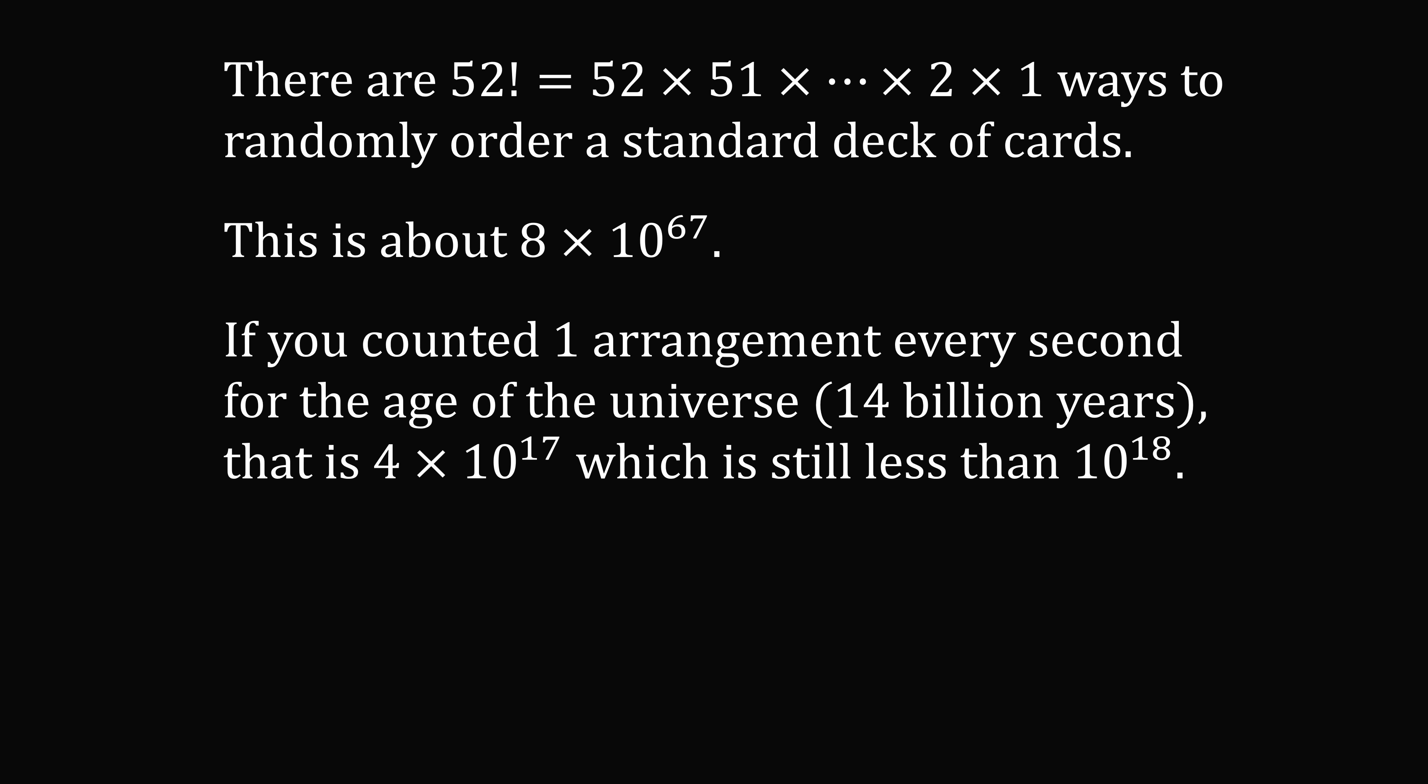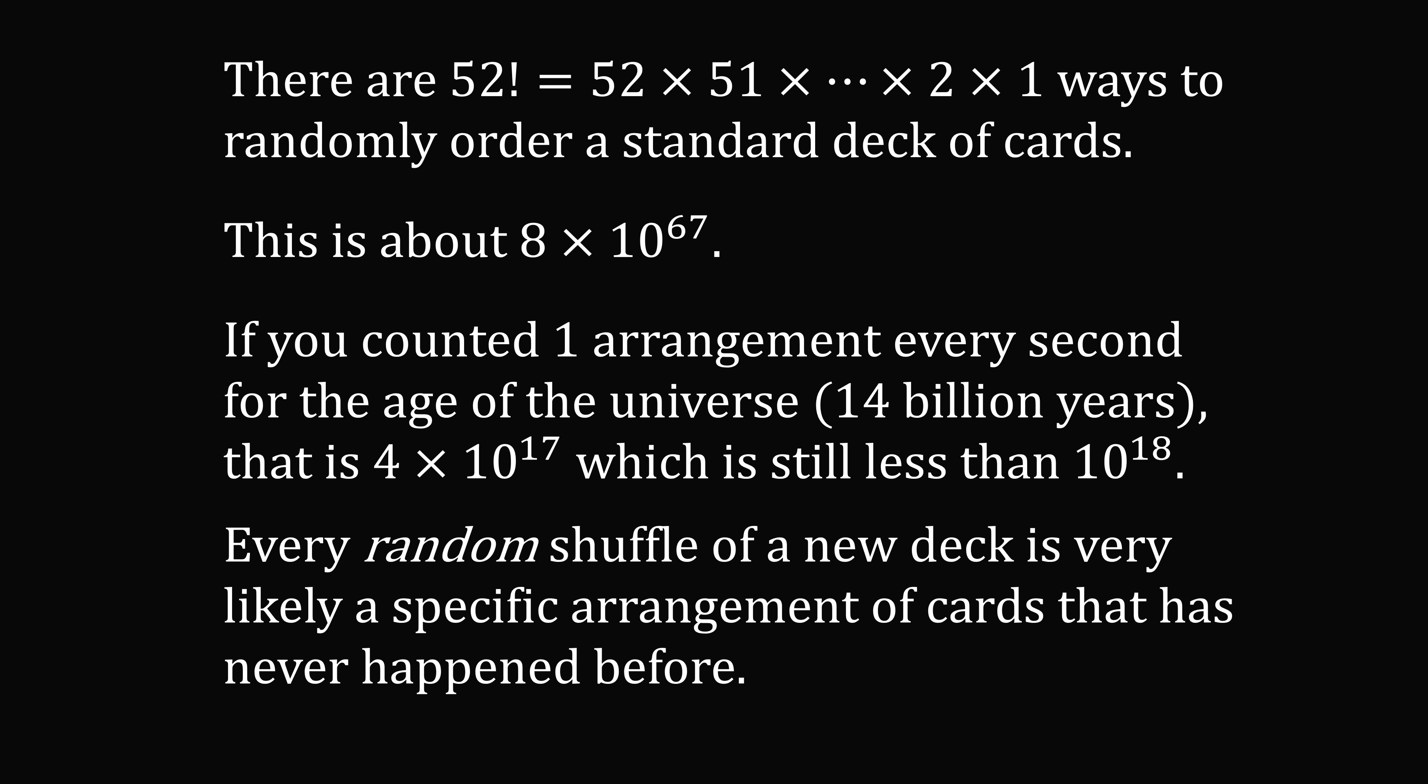If you counted one arrangement for every second of the age of the universe, which is about 14 billion years, that is 4 times 10 to the power of 17, which is still less than 10 to the power of 18. So every random shuffle of a new deck of cards is likely a specific arrangement of cards that has never happened before.